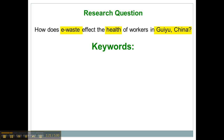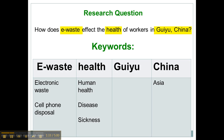It depends — I'd have to try it out. So once I have my keywords, I'm also going to see if I can generate more keywords, because the more keywords I have, it will provide different and better information. So if I have 'e-waste,' 'health,' and 'Guiyu, China,' I could also use 'electronic waste' or 'cell phone disposal' for the word e-waste.